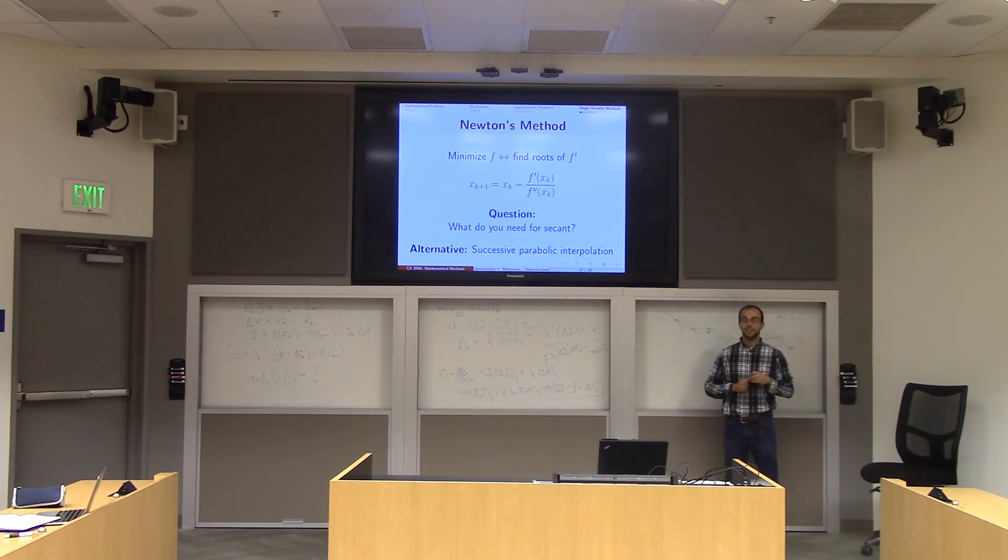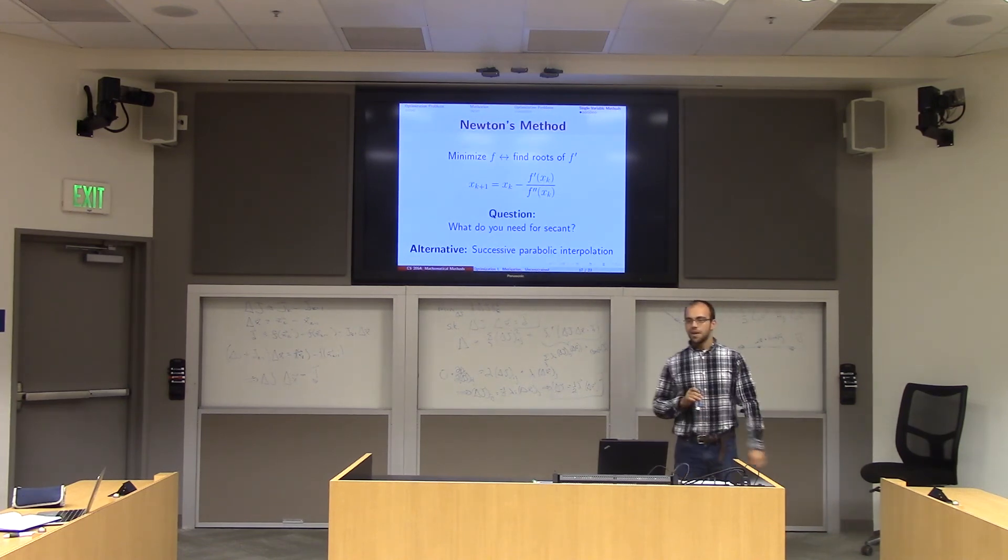It's called successive parabolic interpolation. It turns out that the convergence of this strategy is good, but very, very difficult to prove and analyze. So we don't worry about it a whole lot in this class. That's really because it's not the most effective strategy out there. But if you're looking for a way to extend secant, there it is.